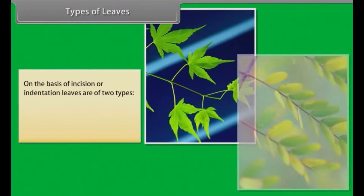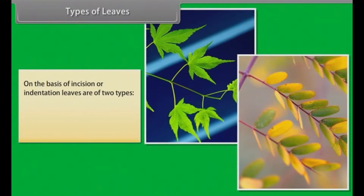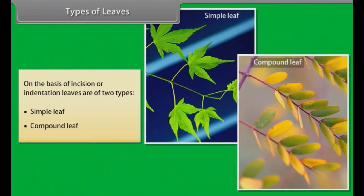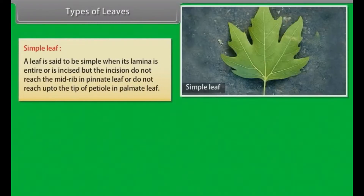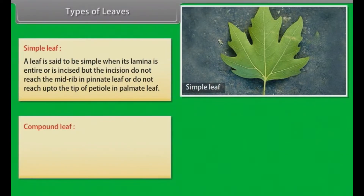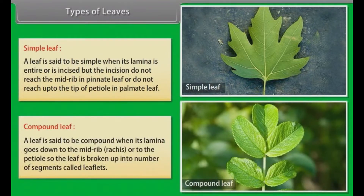Types of leaves. On the basis of incision or indentation, leaves are of two types: simple leaf and compound leaf. A leaf is said to be simple when its lamina is entire or is incised, but the incisions do not reach the mid-rib in a pinnate leaf, or do not reach up to the tip of the petiole in a palmate leaf. A leaf is said to be compound when its lamina goes down to the mid-rib, rachis, or to the petiole, so the leaf is broken up into a number of segments called leaflets.